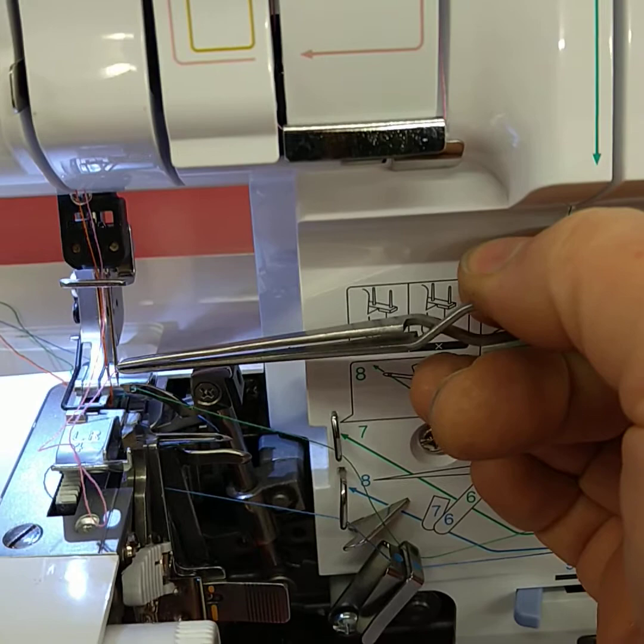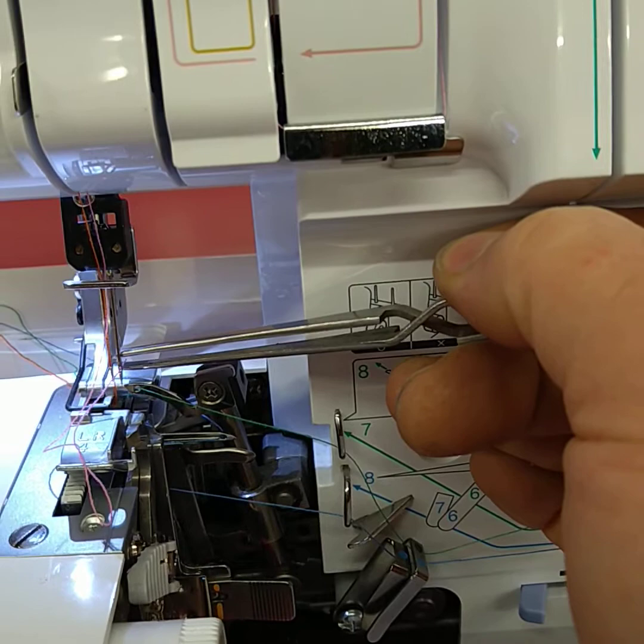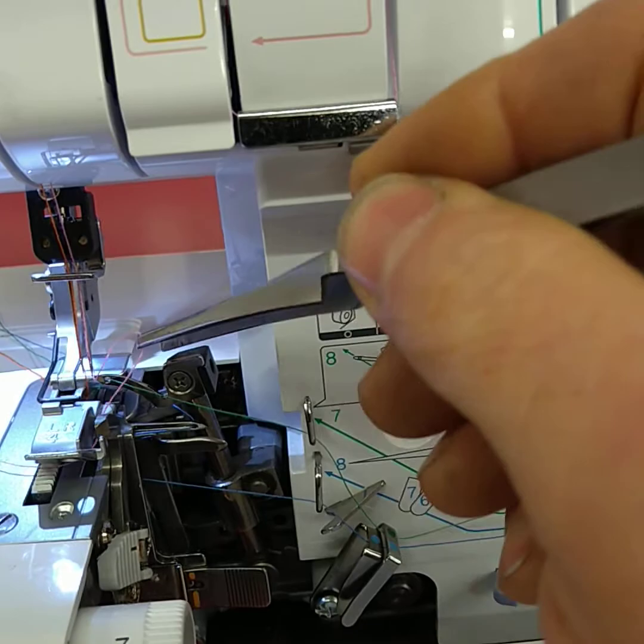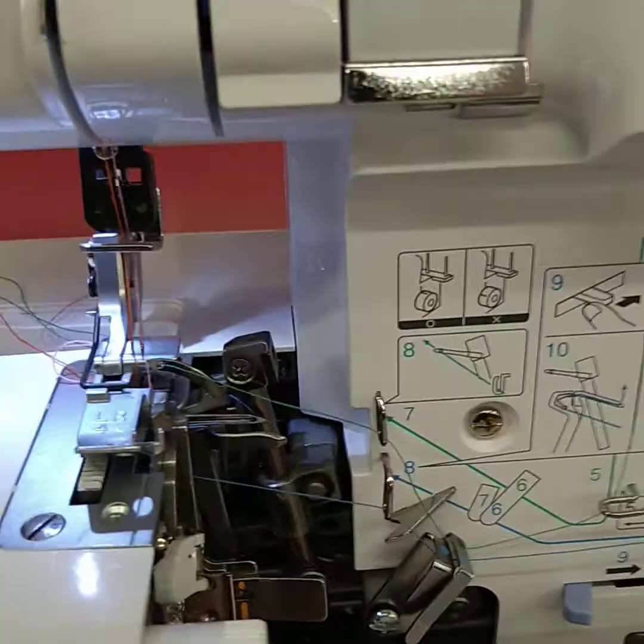So you can see the thread and the eye very clearly. When you pop the thread through you can grab the thread very easily and pull it through. Again this thread goes around the blade and then we can pull it through out of the back of the machine.